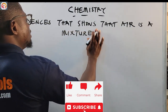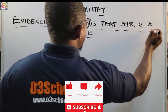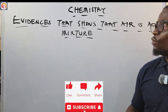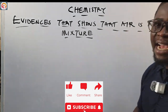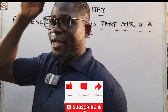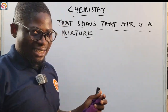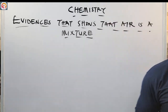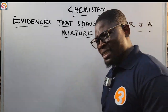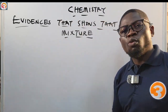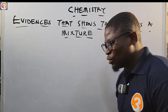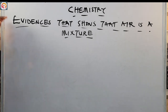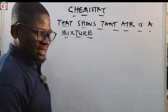In the last episode, we defined air as a mixture of gases. Air is a homogeneous mixture of gases. Because of that, we need to look at what evidence supplies or shows us that the air we talk about is really a mixture of gases.